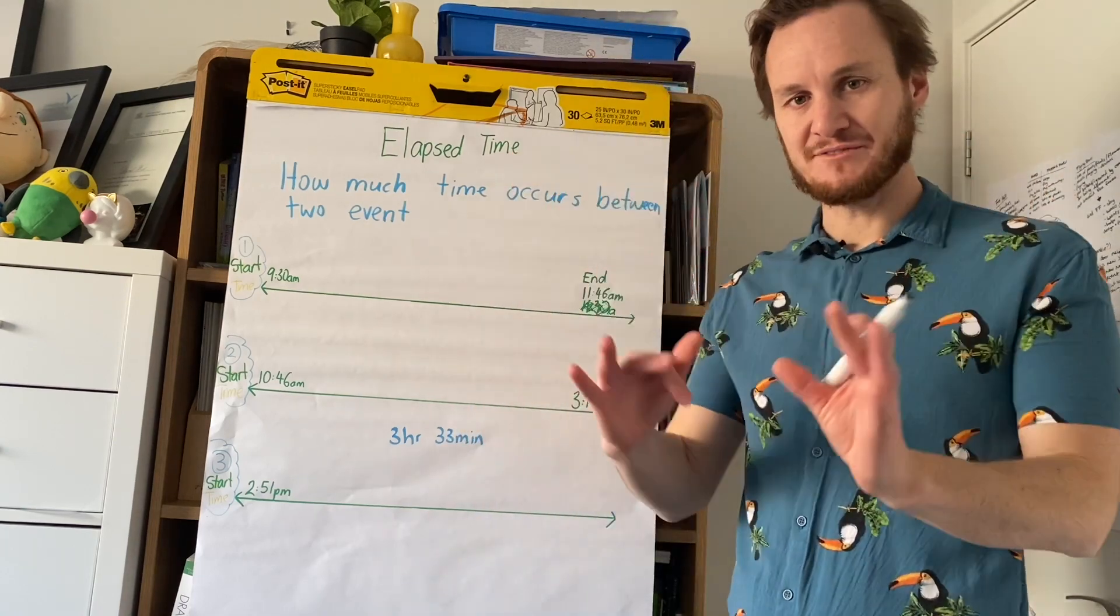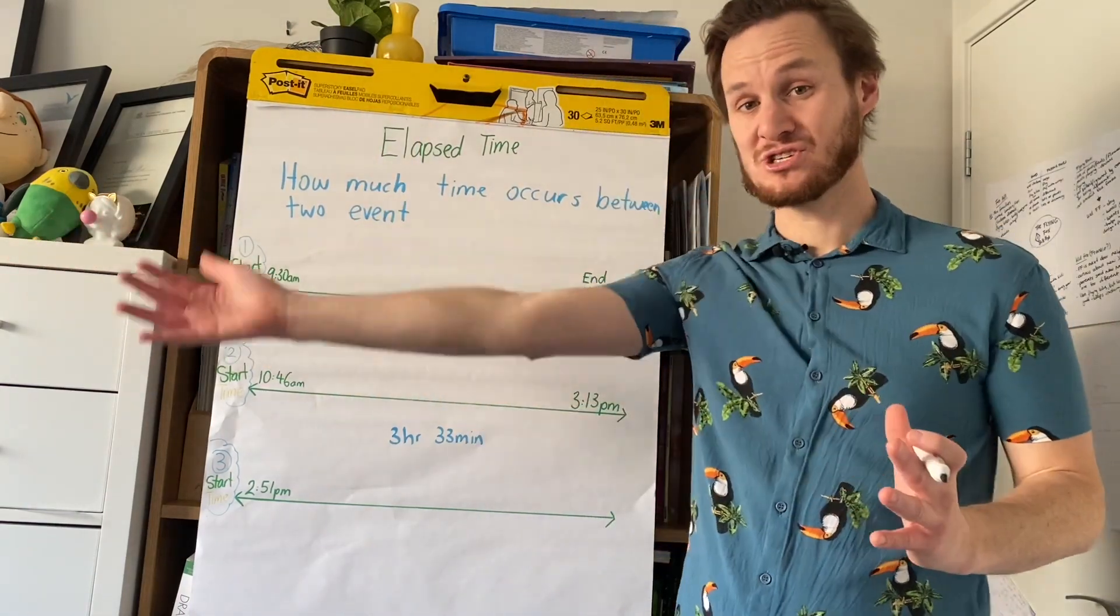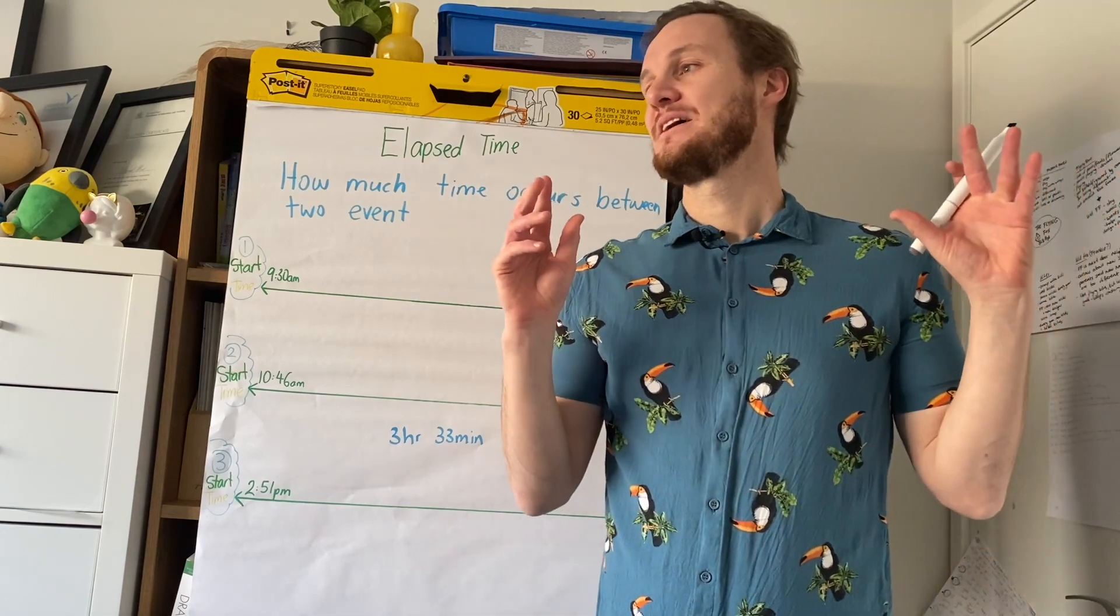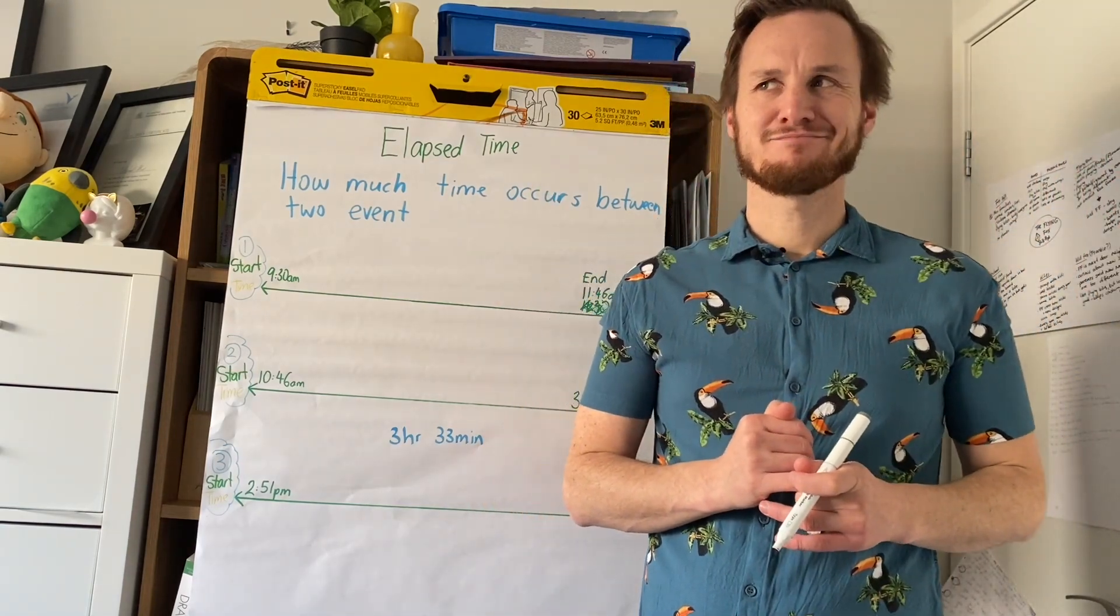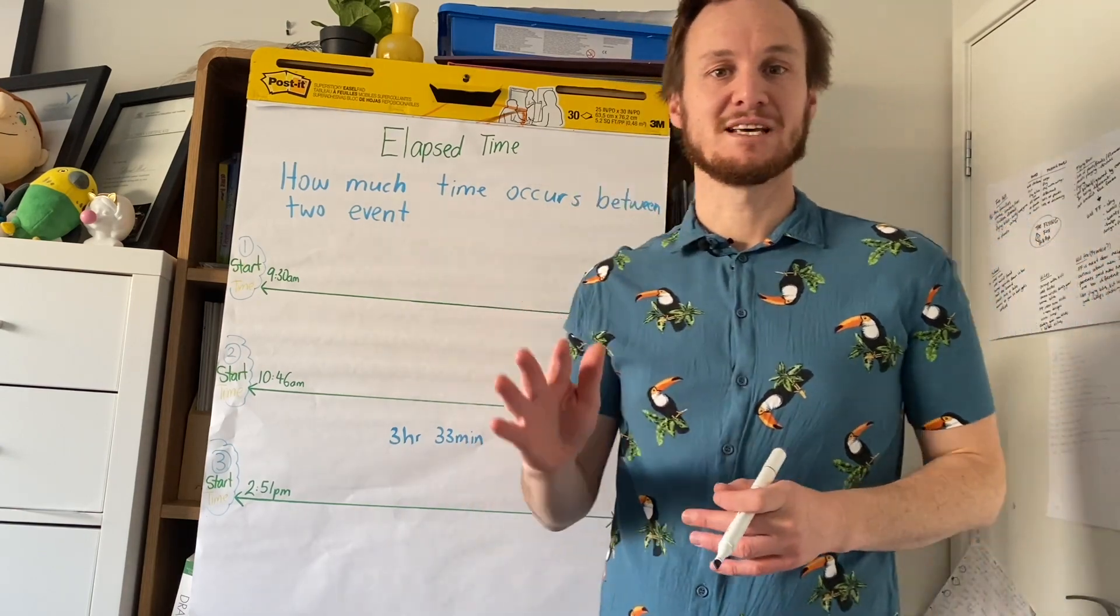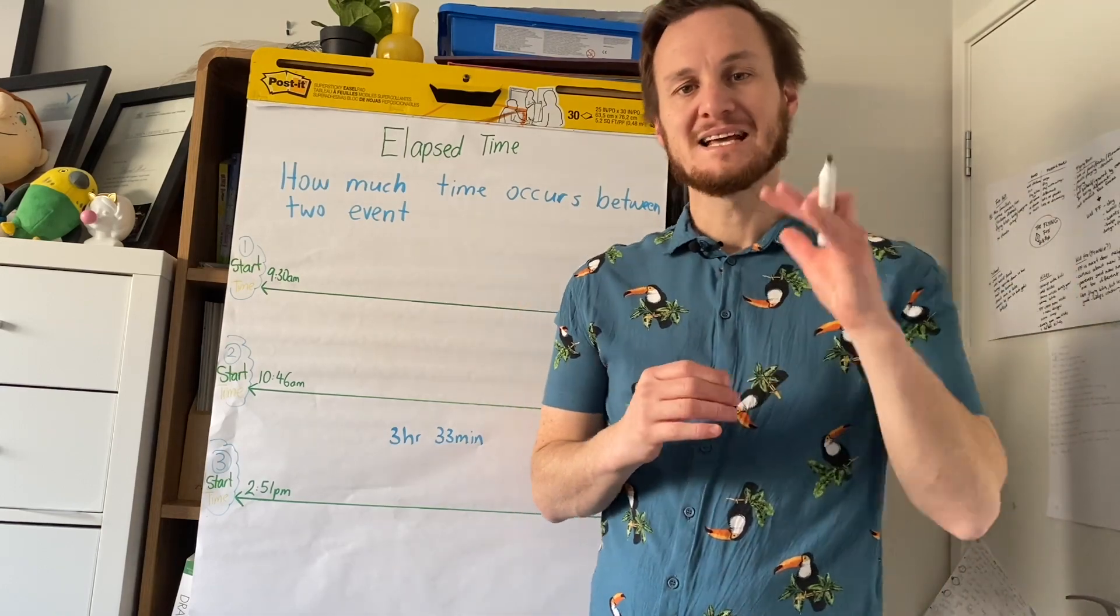The concept of time and how much time has elapsed - which means how much time has gone and what's the new time now - is a really tricky concept. You might be the sort of person who just gets it. Someone says it took 3 hours and 30 minutes and you're like, yeah, I get it. But your brain might be the sort of thing that gets confused.